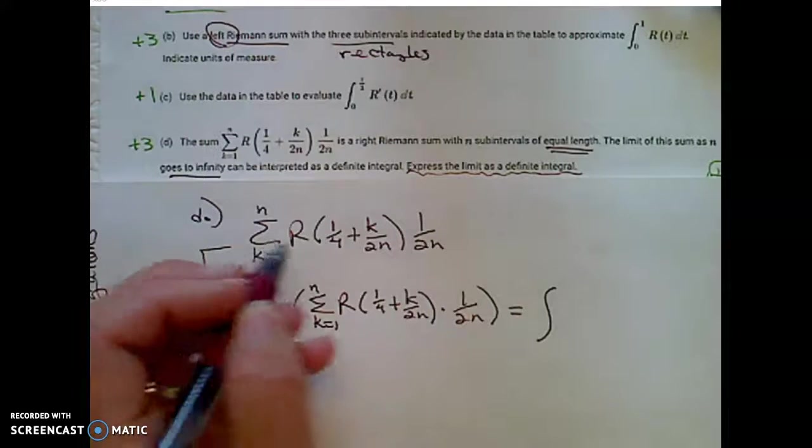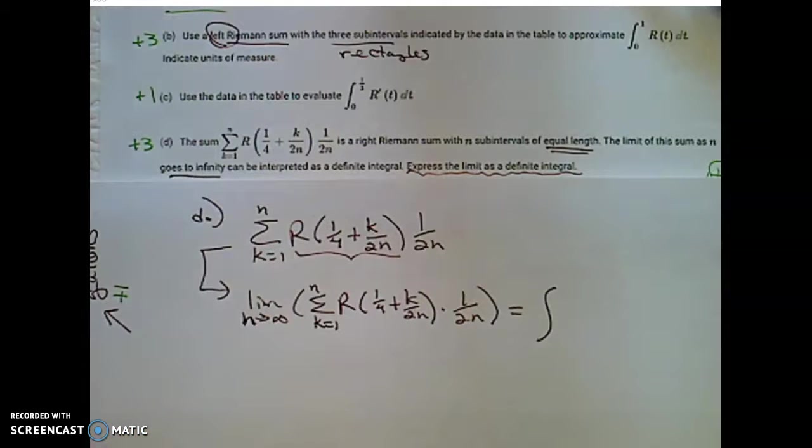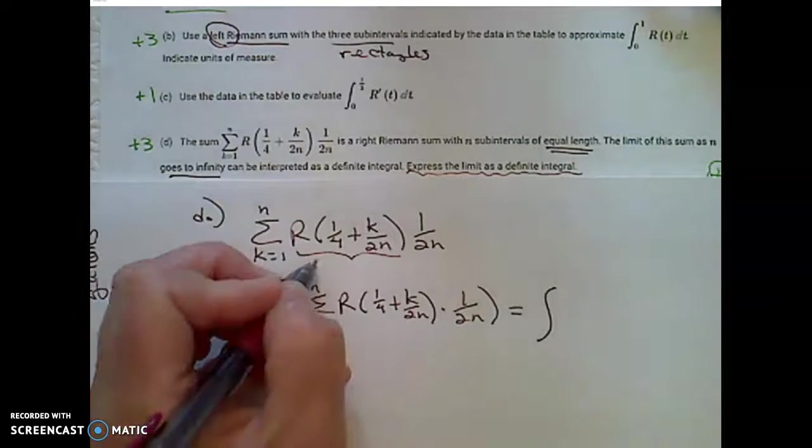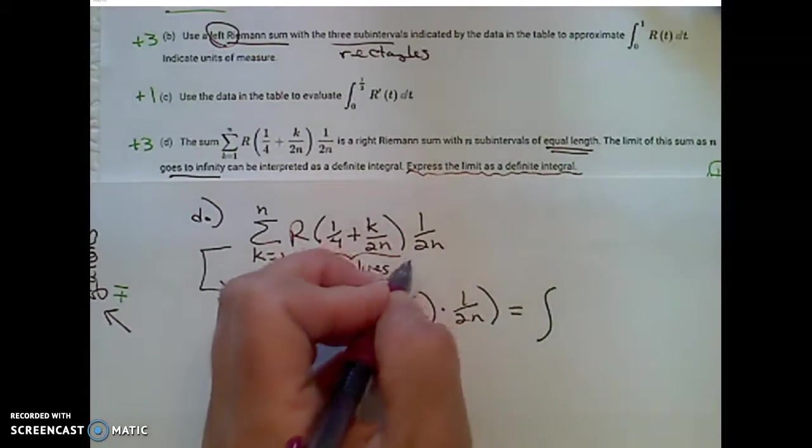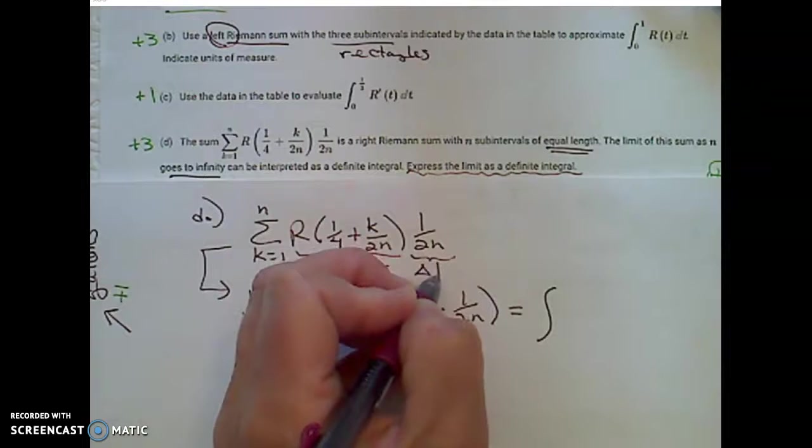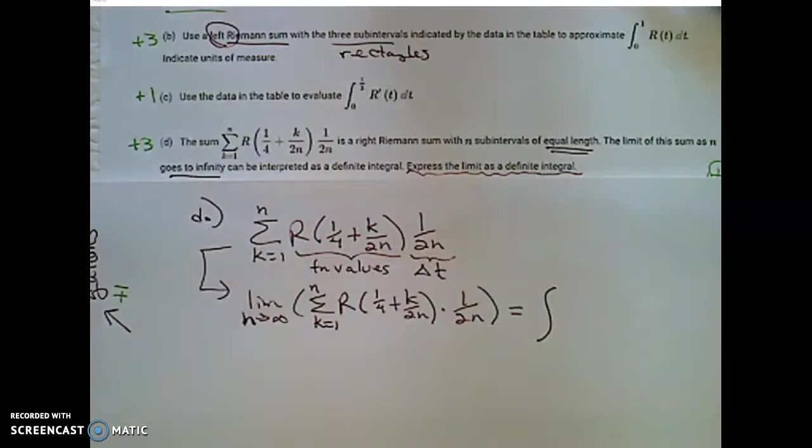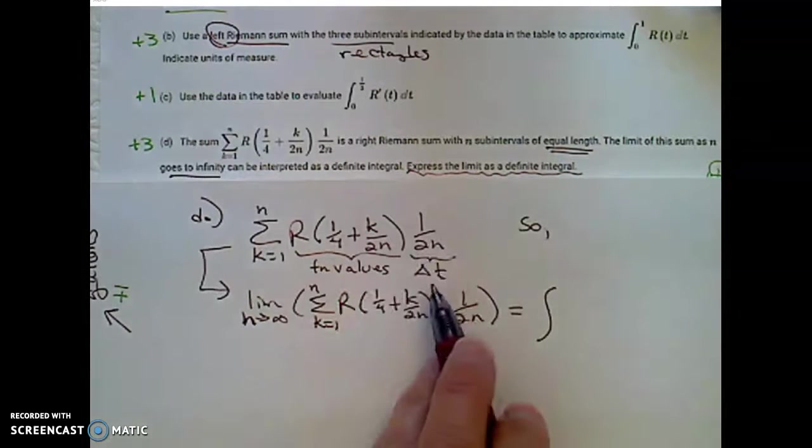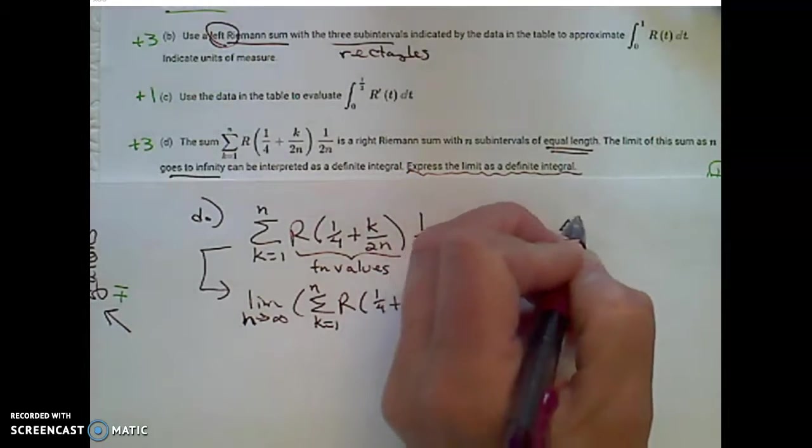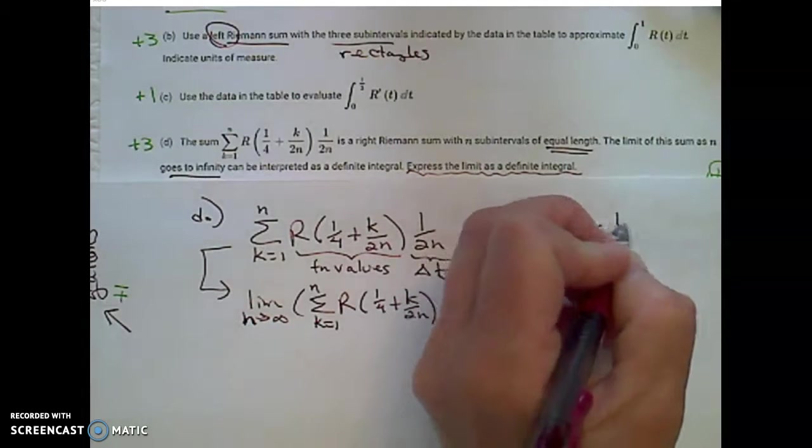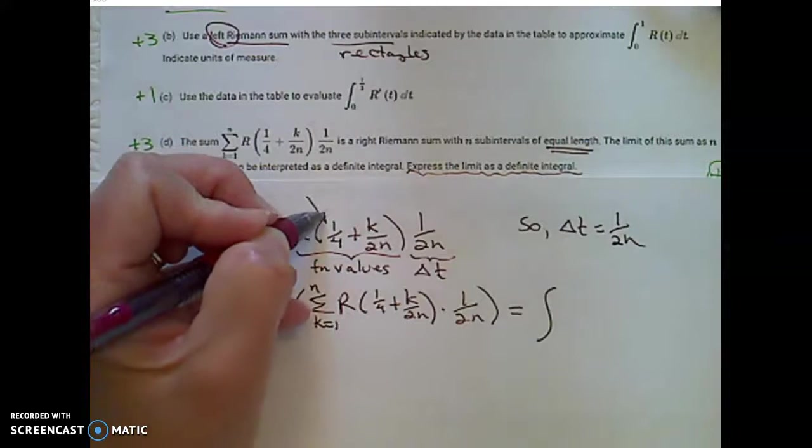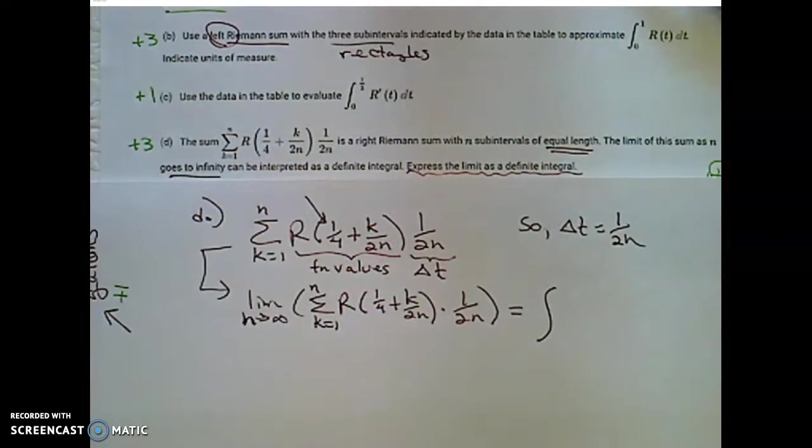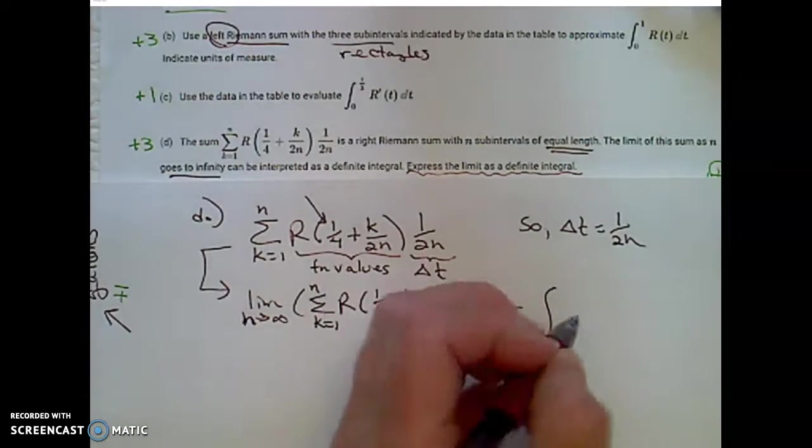Let's remember a couple of things up here. Do you recognize this as function values? And those function values represent the heights of the rectangles. And this, then, is that change in t. Time, in this case. Dt at the end. So we recognize that this dt, that change in t, is equal to 1 over 2n. I look at this as my starting value. So I'm starting at 1 fourth. In this case, it's a time. Starting at a time of 1 fourth.